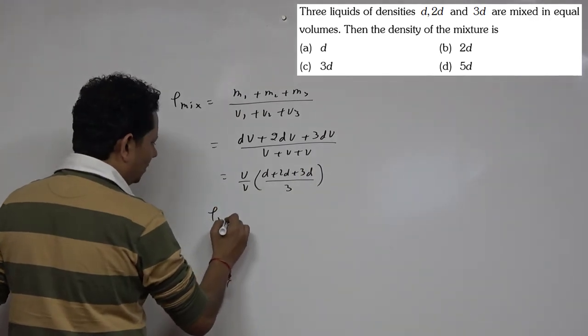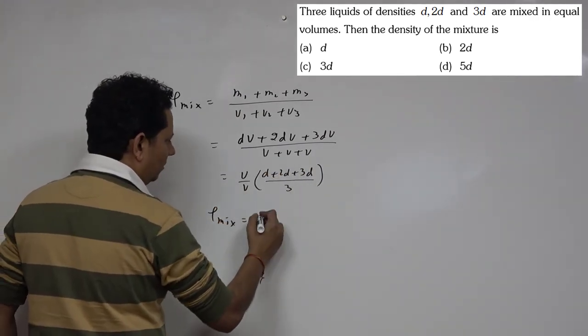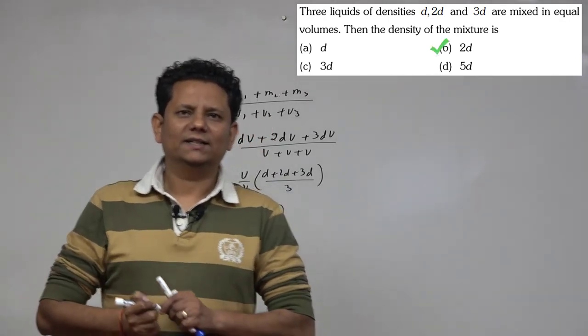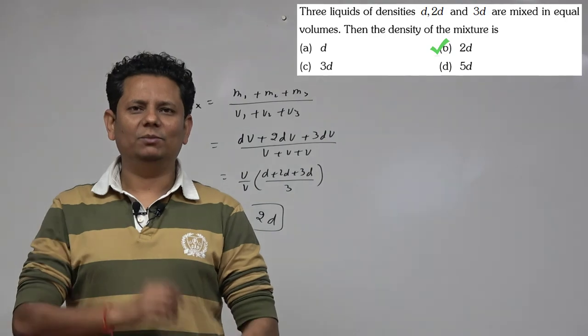If we add these, the numerator becomes 6d. So your density of mixture is 6d divided by 3, which equals 2d. That will be our final answer. Based on this, we can say that option B, 2d, would be the correct choice.